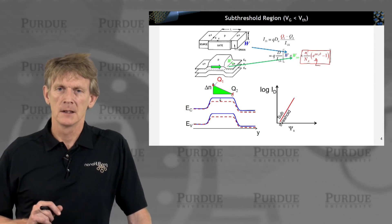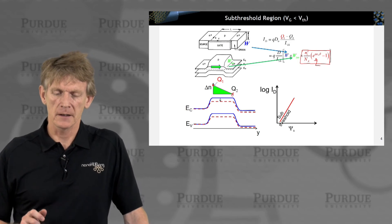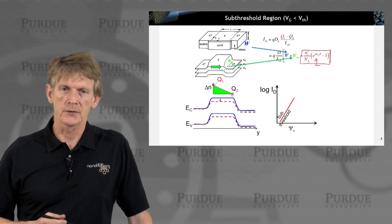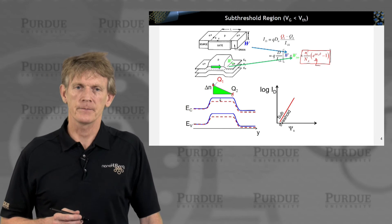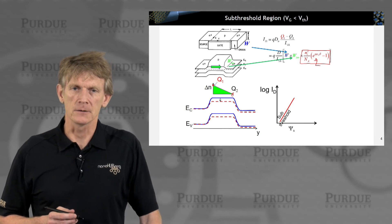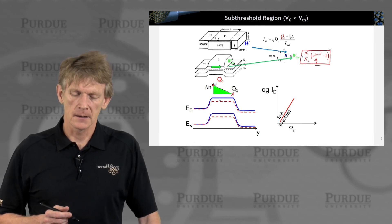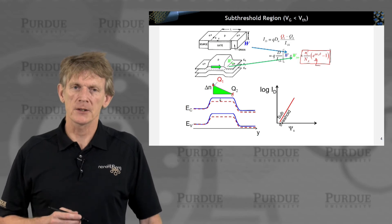And you can plot the increase of current again, and it looks like a diode current, a forward bias diode current. And this is called sub-threshold.